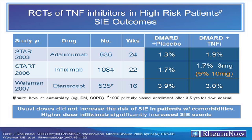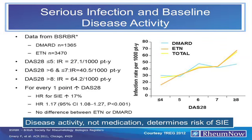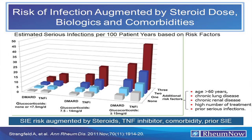You probably need multiple risk factors, as data from the BSR-BR shows quite clearly: it's not the drug, it's the disease activity. Whether on a DMARD or a TNF agent, as you increase disease activity, you increase infection risk. When you pile on additional high-risk factors — age, chronic lung disease, chronic renal disease, number of prior treatment failures — combined with increasing steroid doses, then the addition of a TNF inhibitor significantly alters the risk.